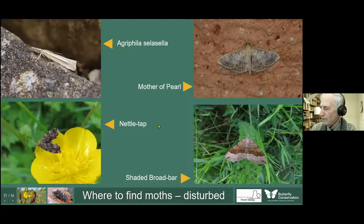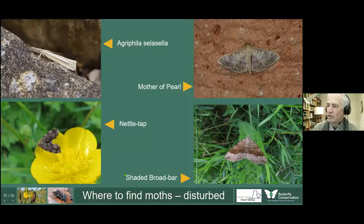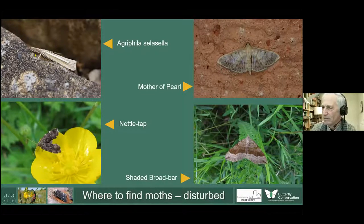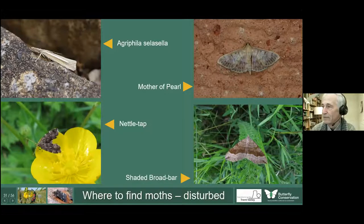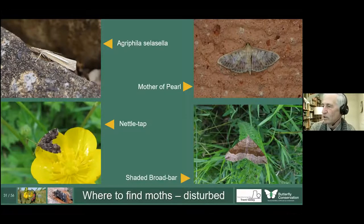Some moths don't fly habitually during the day — you more or less see them by disturbing them, when they'll take flight. The grass moths: you only have to wade through a grassy field in summer and they get up — they feed on grasses. The Mother of Pearl feeds on nettles, so wherever there's a nettle patch, walking past might disturb one. The Little Nettle-tap, and the Shaded Broad-bar — a typical grassland species — you might disturb or see during the day rather than it flying on purpose.